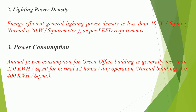Feature 2: Lighting Power Density — energy-efficient general lighting power density is less than 10 W/sq.m, compared to the normal 20 W/sq.m, as per LEED requirements.